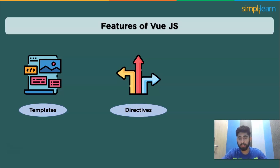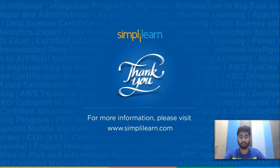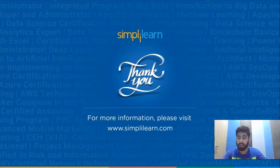The next feature is directives. The built-in directives in Vue.js can be used to carry out a variety of front-end tasks, including v-if, v-else, v-show, v-on, v-bind, and v-model. The final feature is routing — view routing is used to navigate between pages. With this we have reached the end of this video. In the next video on Vue.js we will see how to install Vue.js and learn new things about it, so make sure to like and share.